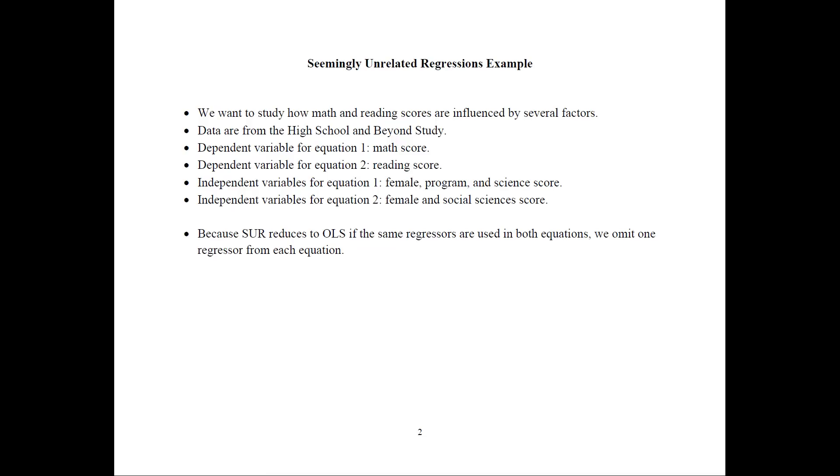and for the second one reading score. Independent variables for equation one would be whether or not a person is female, the type of program that they've attended, and their science score.